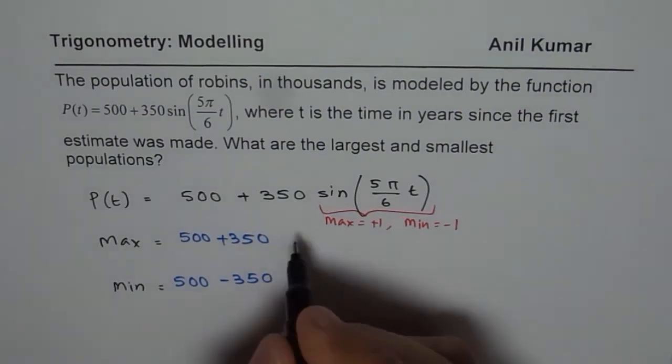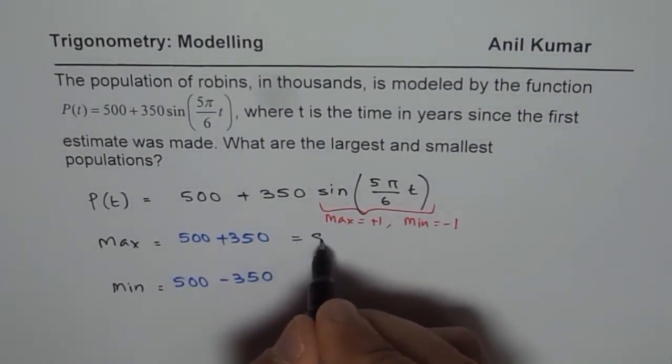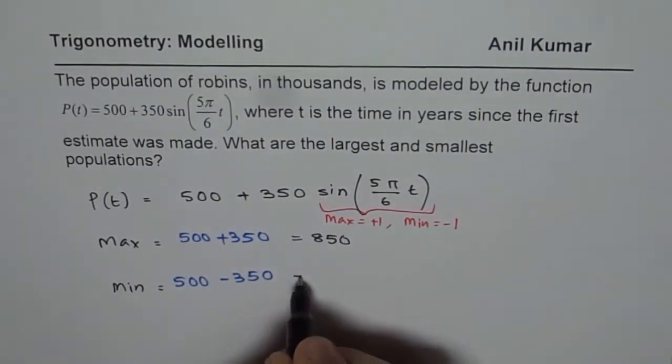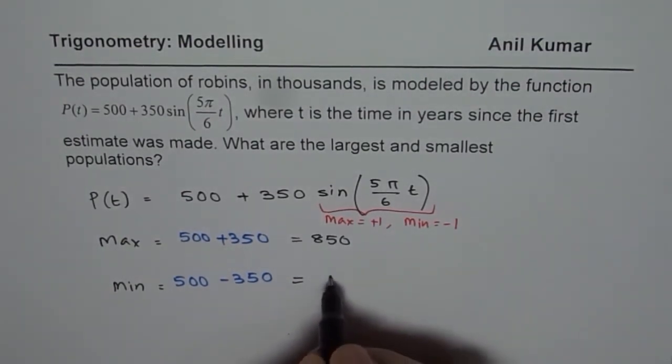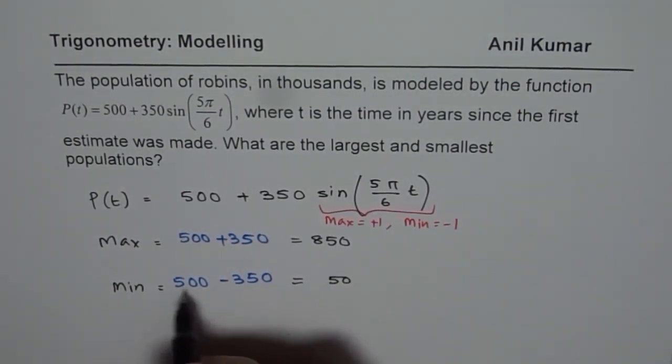Let us find it. When you add, you get 850. When you subtract, you get 150.